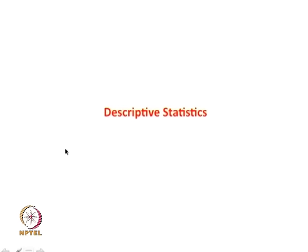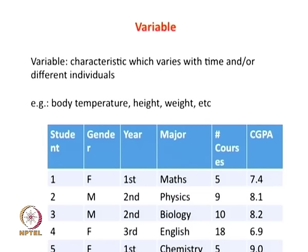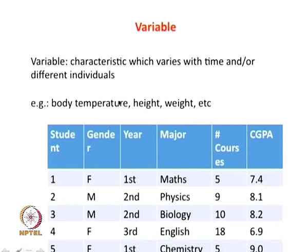The prelude to inferential statistics is descriptive statistics, and you want to begin with descriptive statistics. In descriptive statistics, one of the most important things is a variable — what is your variable? A variable is a characteristic which varies with time or depending on conditions. For example, body temperature can be a variable if you want to figure out whether someone has a fever. Height, weight, and so on are also variables.